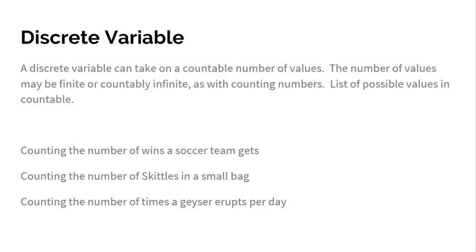A discrete quantitative variable can take on a countable number of values. The number of values may be finite or countably infinite, as with counting numbers — think about a list of possible values that is countable. The key thing is: if you're talking about a variable in the form of a number that was counted, that makes it discrete. For example, counting how many wins a soccer team gets — five wins, seven wins, ten wins — that's discrete.